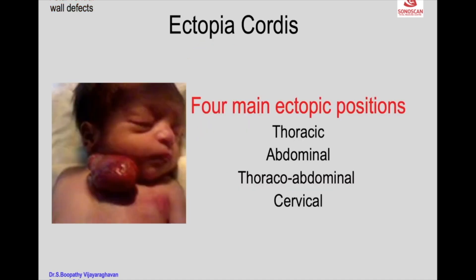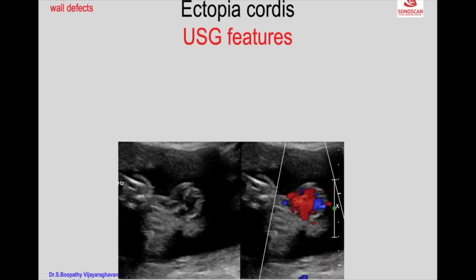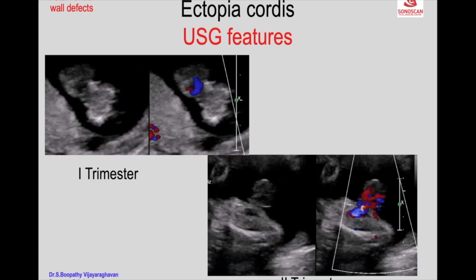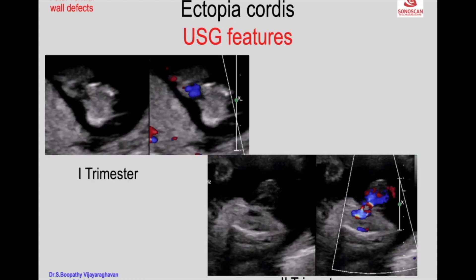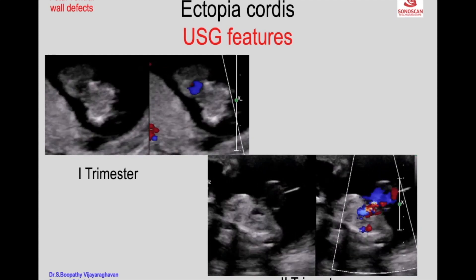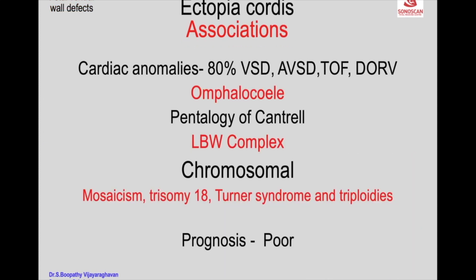Limb body wall complex can be thoracic, abdominal or thoracoabdominal, and cervical types. Ultrasound is easy to pick up. You can see grayscale and color Doppler images, though the prognosis is poor.